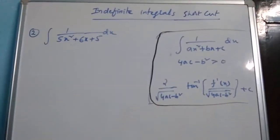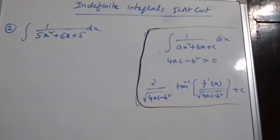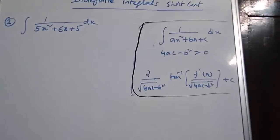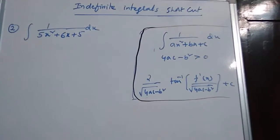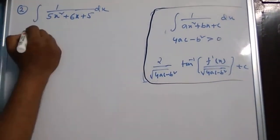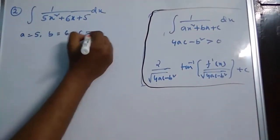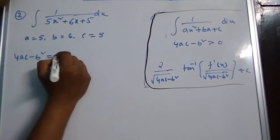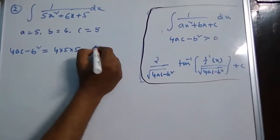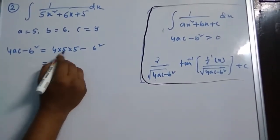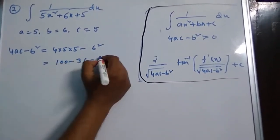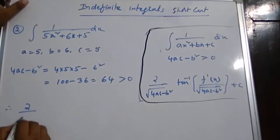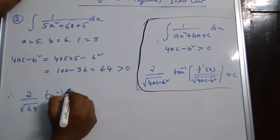Now have a look at the integral of 1 by 5x squared plus 6x plus 5. First find 4ac minus b squared — is it positive or negative? Here a equals 5, b equals 6, c equals 5. So 4ac minus b squared equals 4 into 5 into 5 minus 6 squared, which is 100 minus 36, equals 64. This is clearly positive, so we use the same formula: 2 over root of 64 times tan inverse of f dash of x.